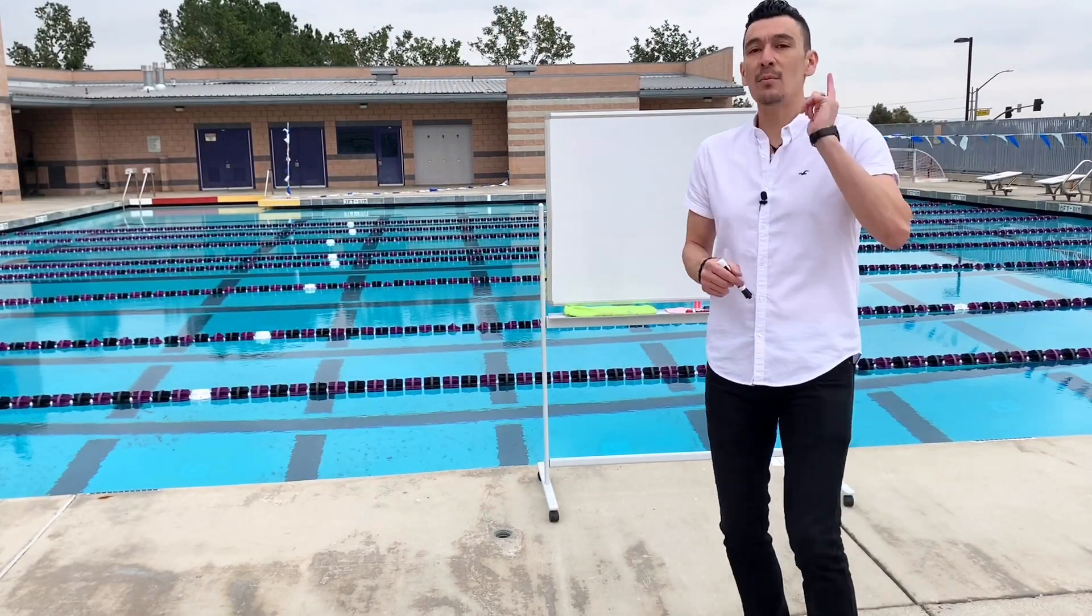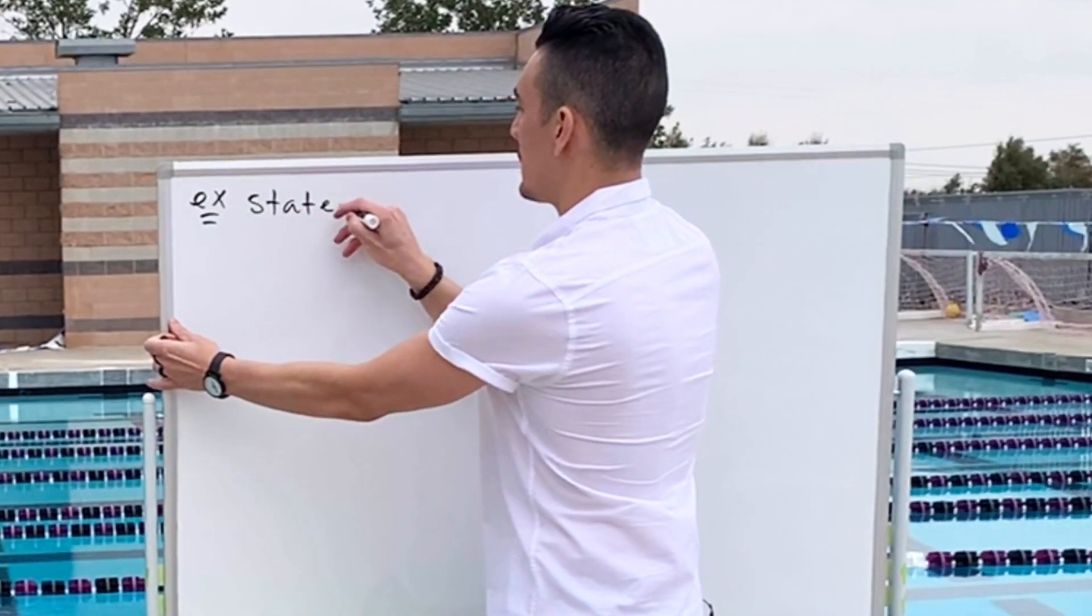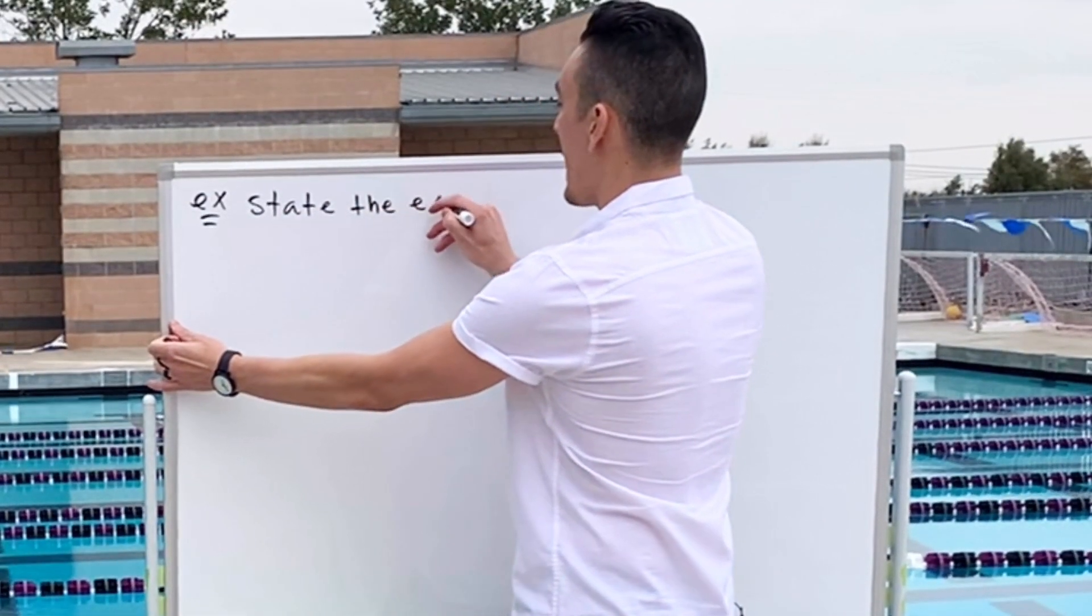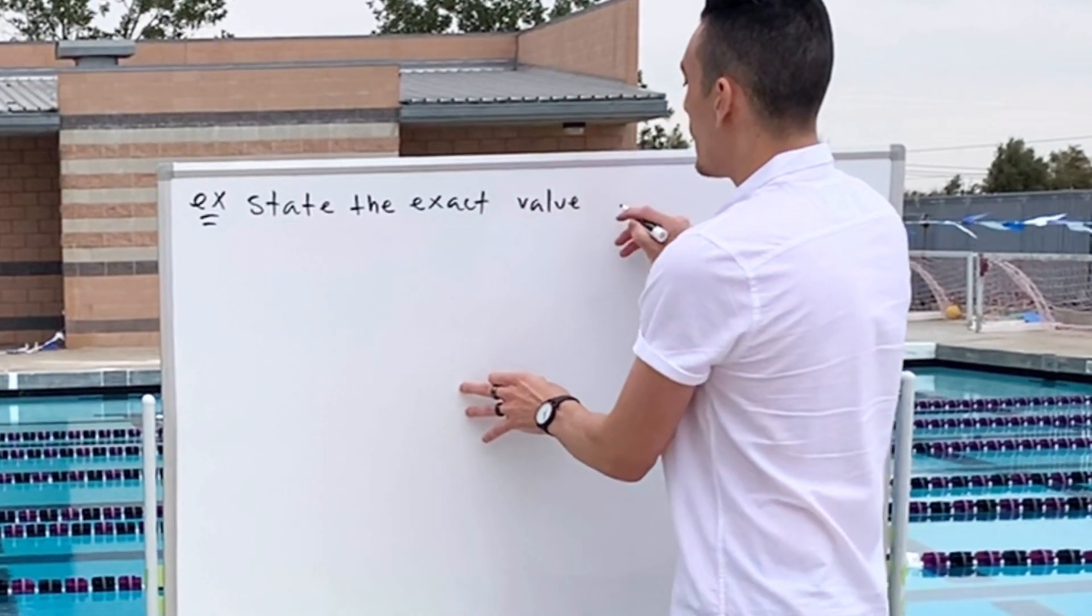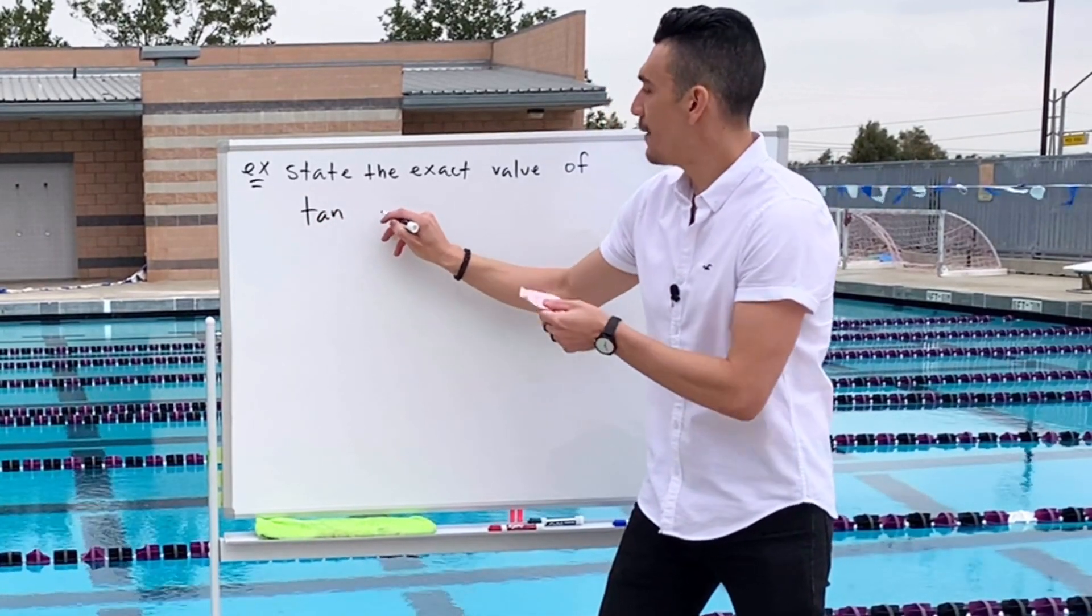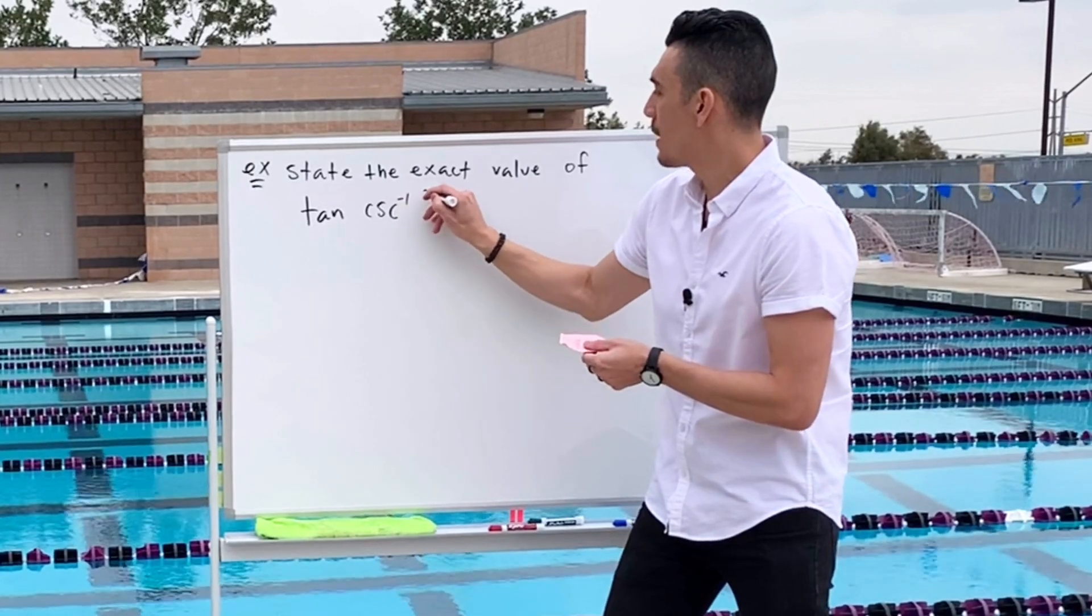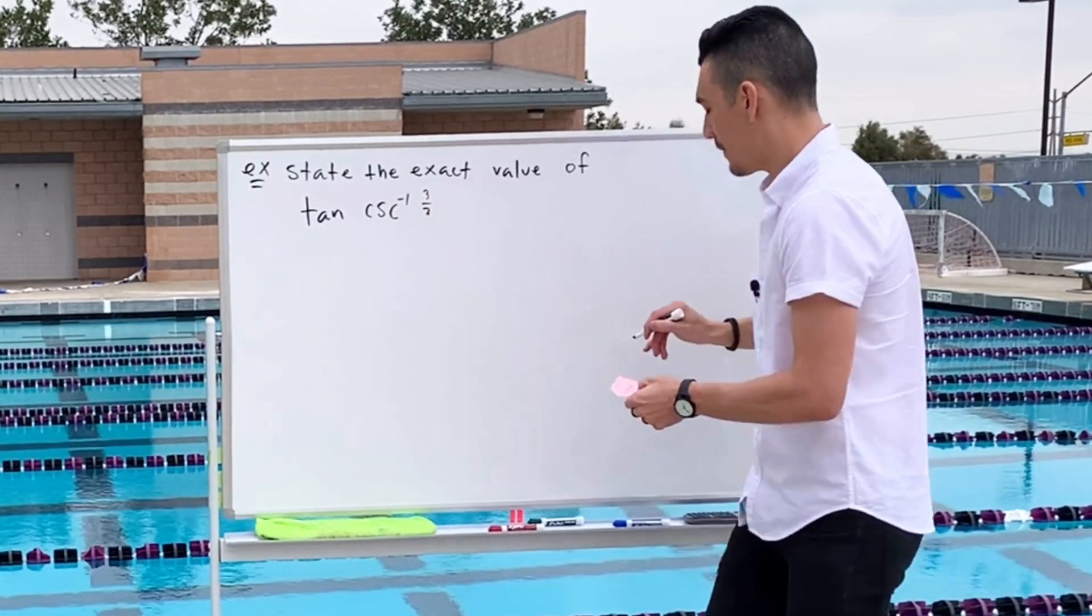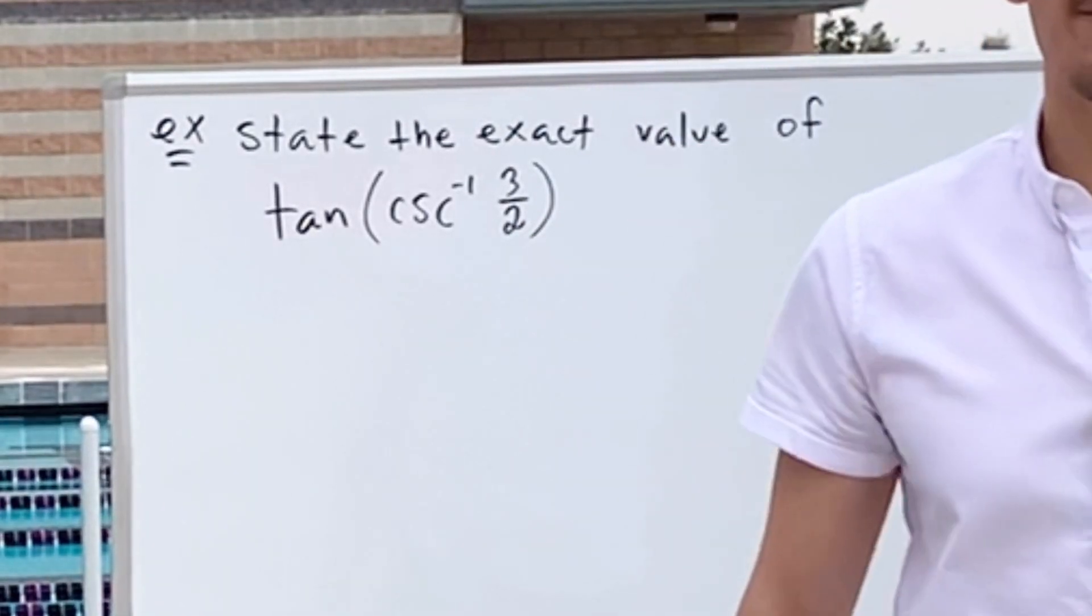Okay guys, so let's try a couple more examples today. Here we go. State the exact value of tangent of cosecant inverse of three halves. It wouldn't be a bad idea just to put some parentheses there if you want.